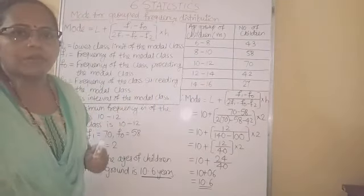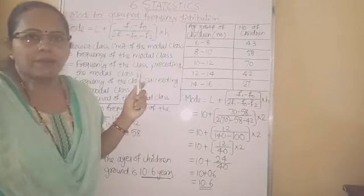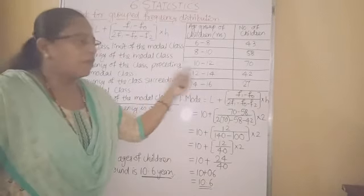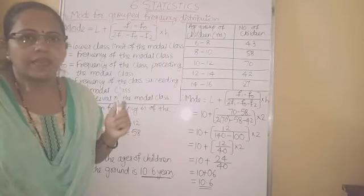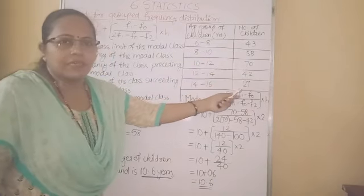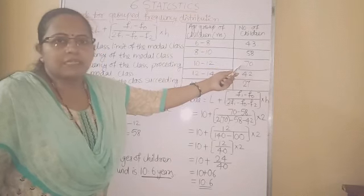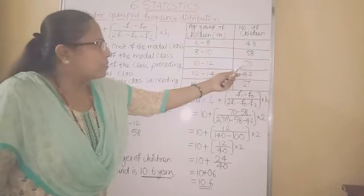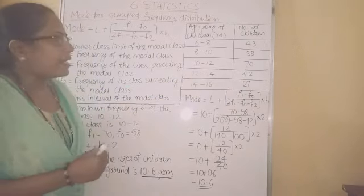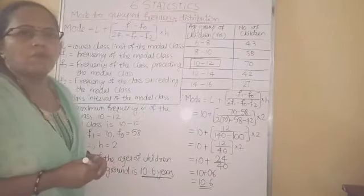To calculate the mode for this table, for mode we don't have to do any extra calculation in the table. The very first step is we have to find out the modal class. To find out the modal class, you have to observe the maximum frequency. In this table, maximum frequency is 70. This frequency belongs to the class 10 to 12, so the modal class is 10 to 12.